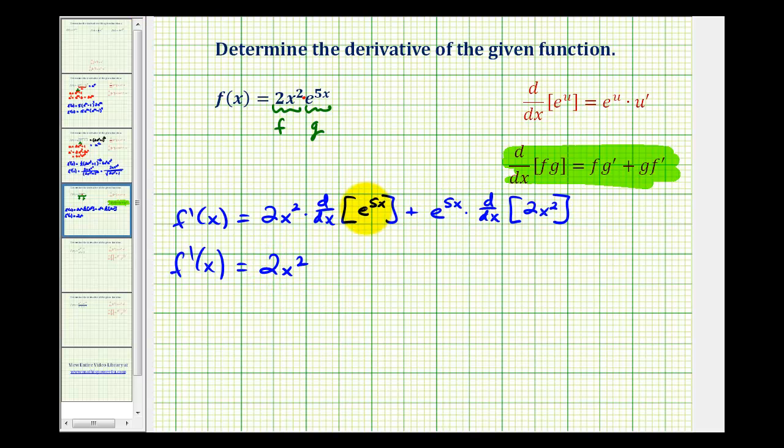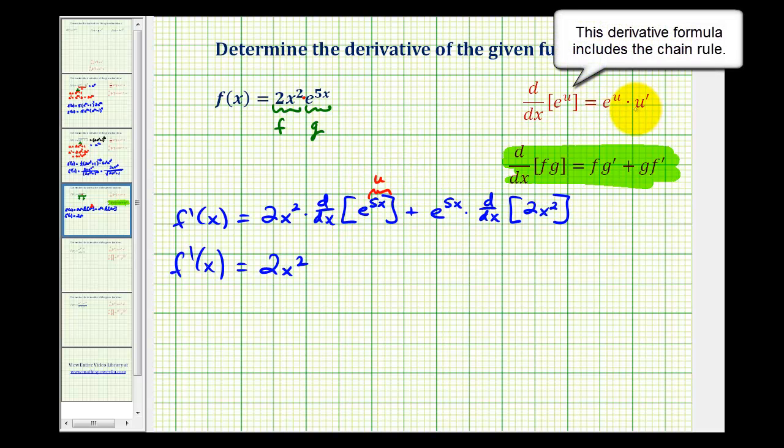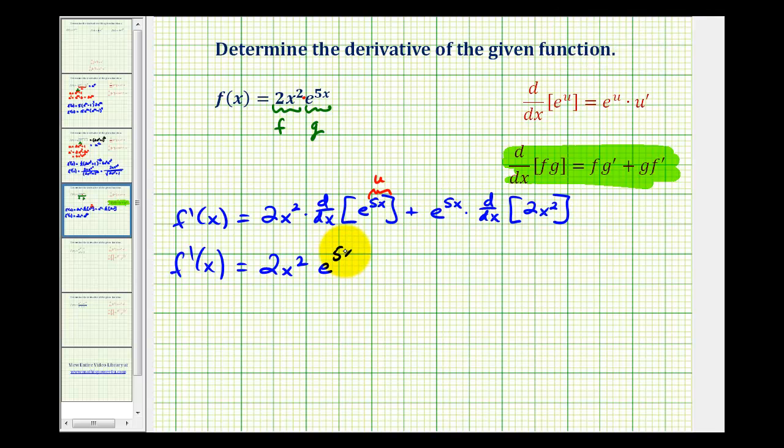For the derivative of e to the power of 5x, this is a composite function. So we'll let u equal 5x, and the derivative of e to the u is going to be e to the u times u prime. So we'll have e to the 5x times u prime, which is 5.